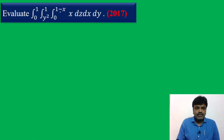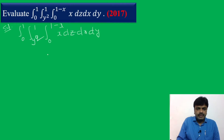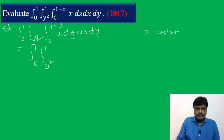Let us check the order here: the innermost limits involve x, so dz first, then dx, then dy. This order is the proper order. Write down the given integral: integral 0 to 1, integral y-squared to 1, integral 0 to 1 minus x, x dz dx dy. That is equal to integral 0 to 1, integral y-squared to 1 — now with respect to z, x is constant — so we get x into z between limits 0 to 1 minus x, into dx dy.